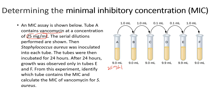Staph aureus is inoculated in each tube. The tubes are incubated for 24 hours, and growth is observed in only tubes E and F. So we have growth only in these two tubes after inoculation and incubation. Identify which tube contains the MIC and calculate the MIC of vancomycin for staph aureus.